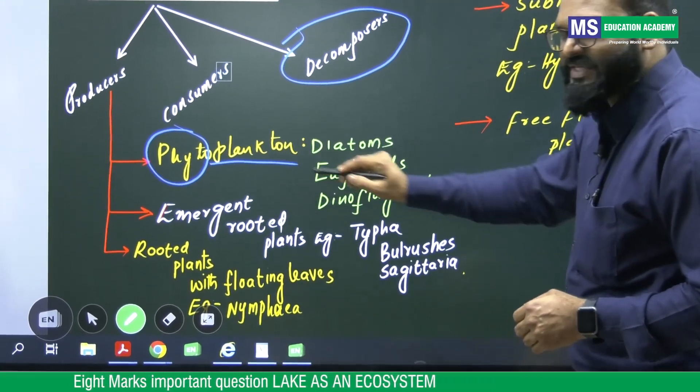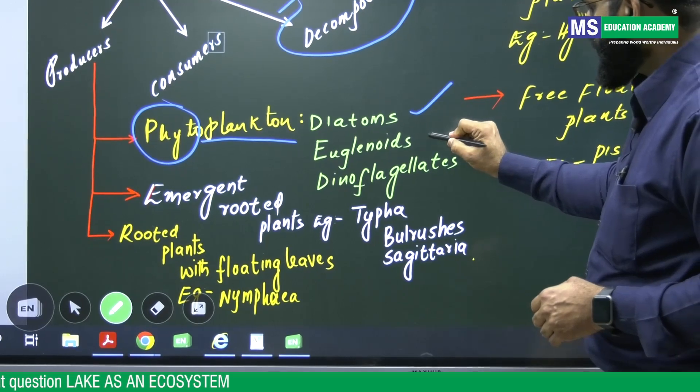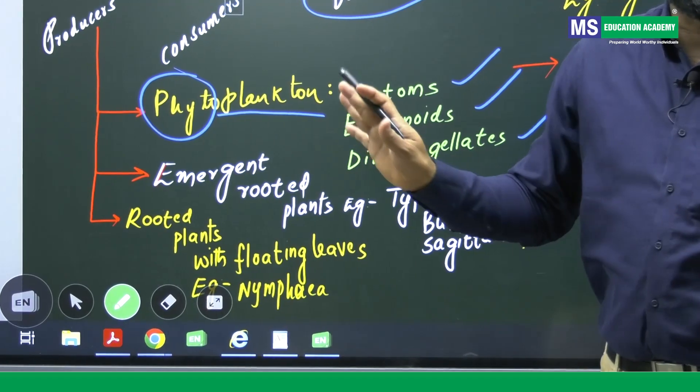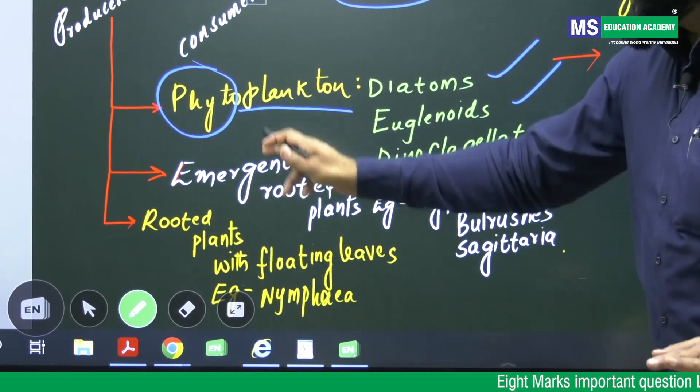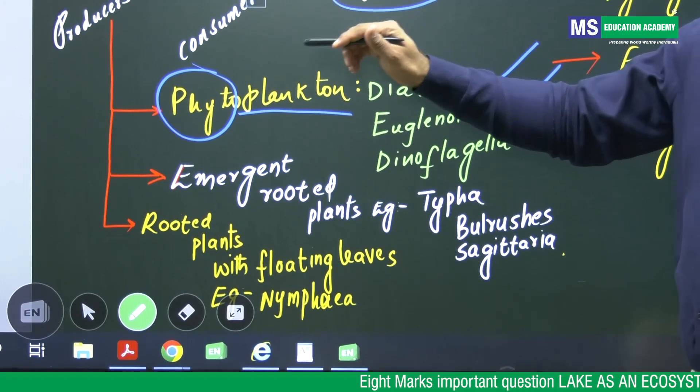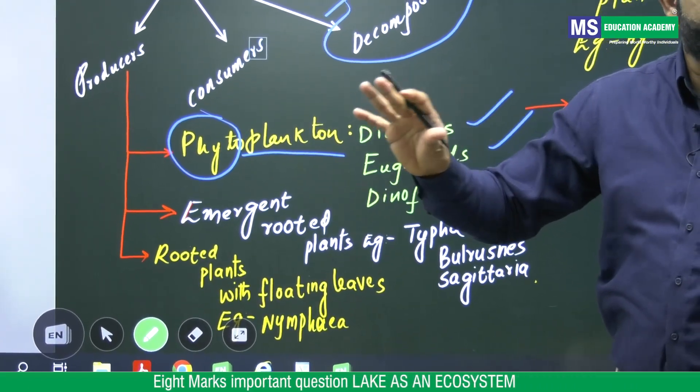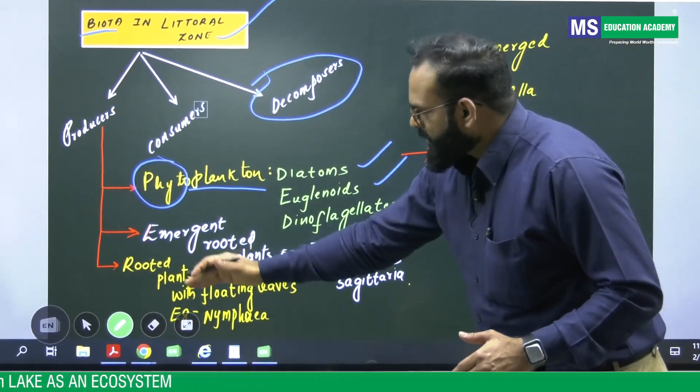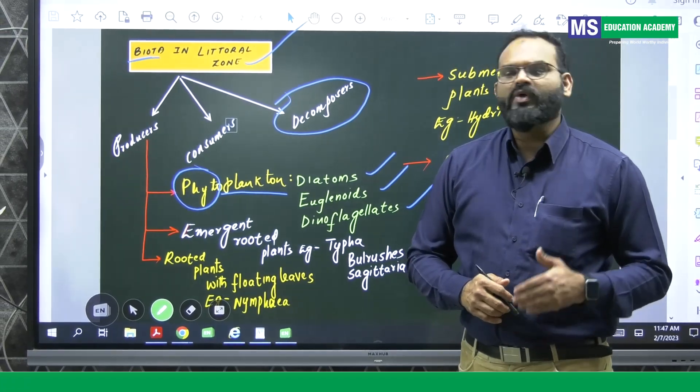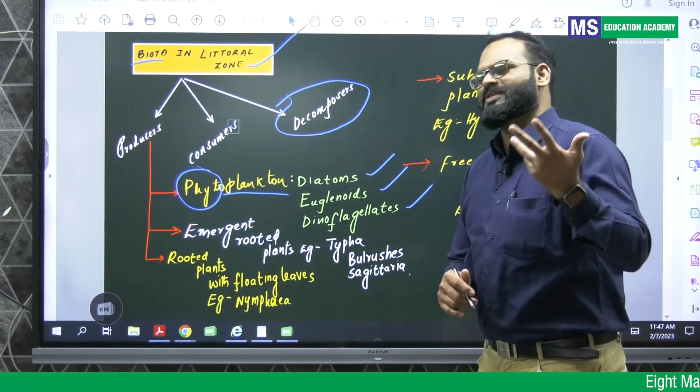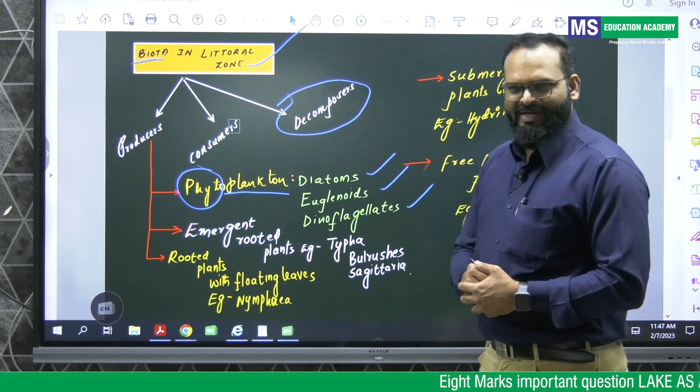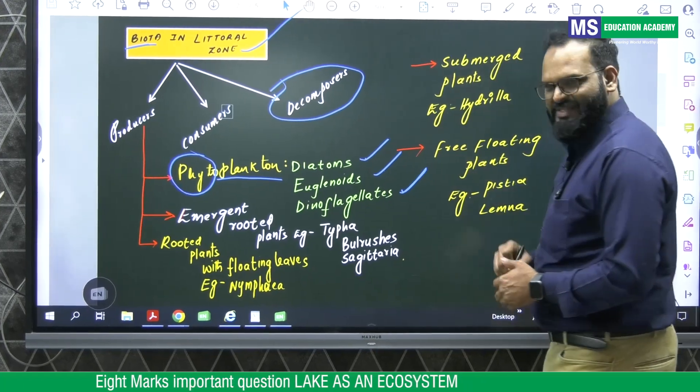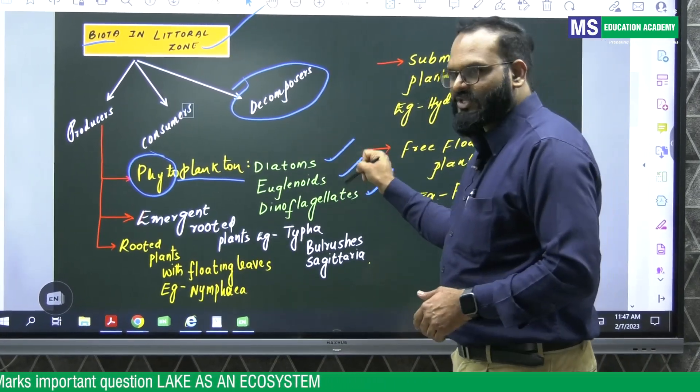Phytoplanktons and hydrophytes. Hydrophytes are aquatic plants. Phytoplanktons includes diatoms, euglenoids, dinoflagellates. For example, if you have answered the answer with these details, you will impress the examiner excellently. So phytoplanktons include diatoms, euglenoids, dinoflagellates. So these can prepare their own food materials.